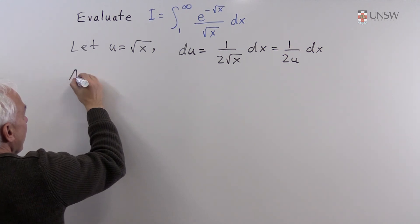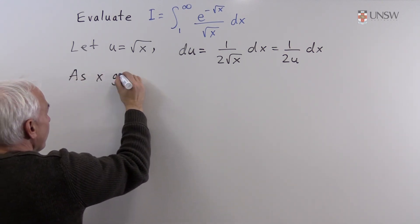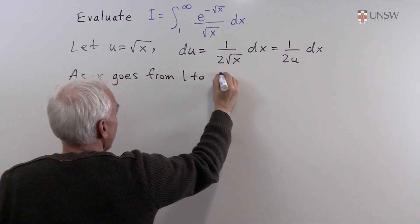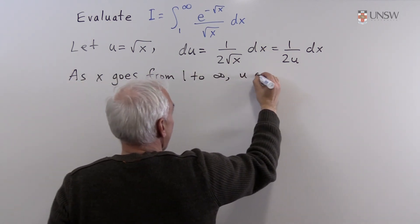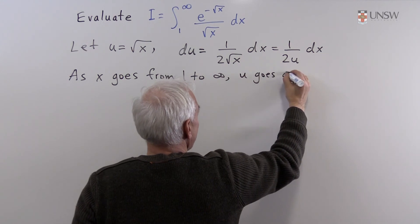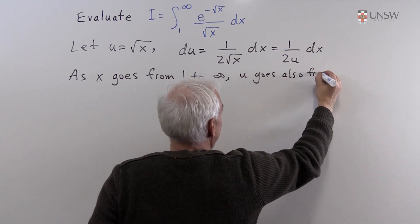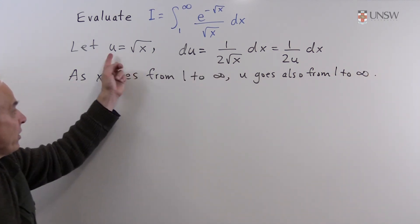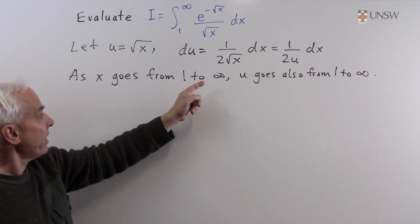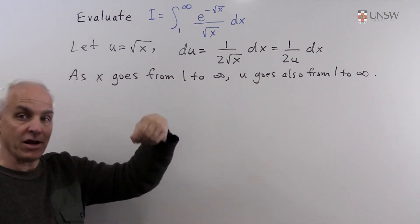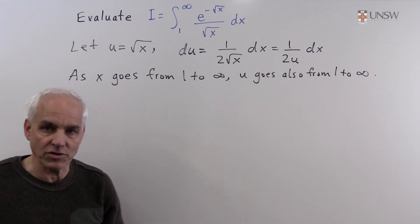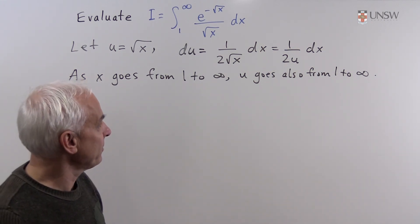Next we observe that as x goes from one to infinity, u goes also from one to infinity. When x is one, u will be one. When x is infinity or getting to be a very big positive value, then u will also approach a very big positive value.